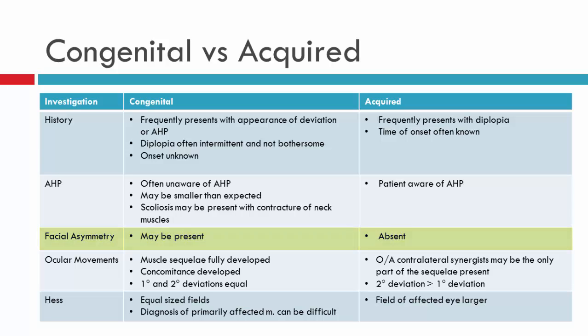In terms of ocular movements, with time the deviation becomes concomitant. So in longstanding and congenital deviations, we expect to have difficulty deciphering the difference between the primary and secondary deviation. This will be reflected on the HES chart, where the fields will be relatively similar in size. It will therefore be difficult to diagnose the primarily affected muscle because of the concomitancy of the deviation.